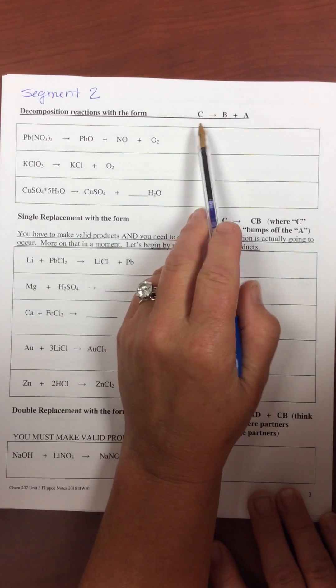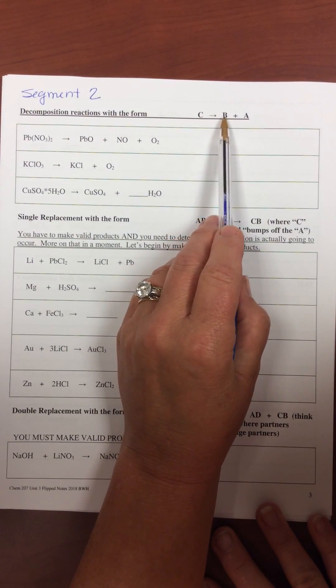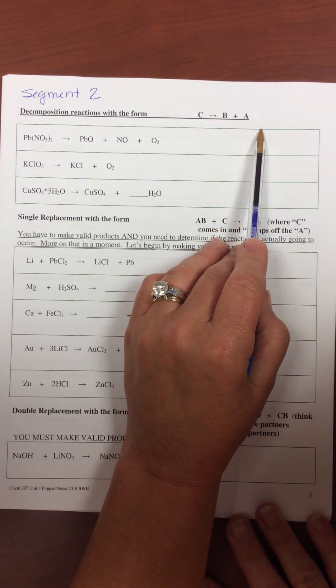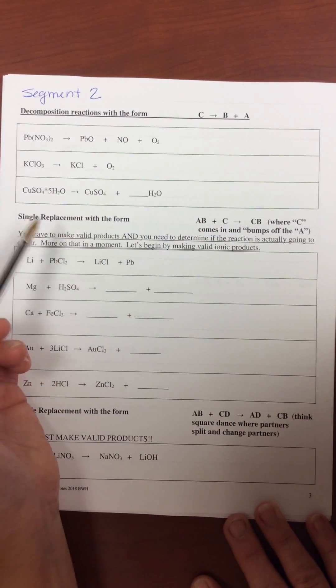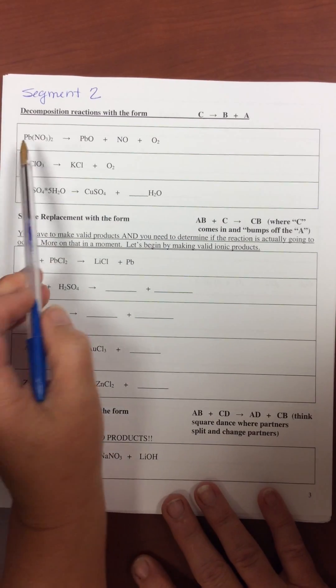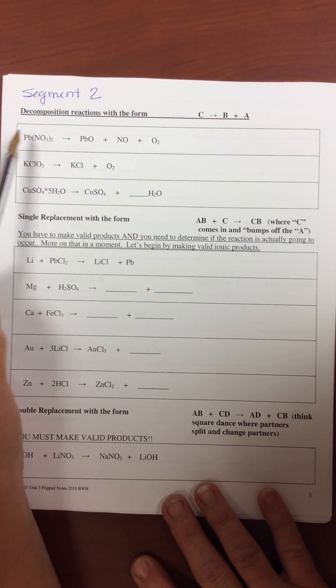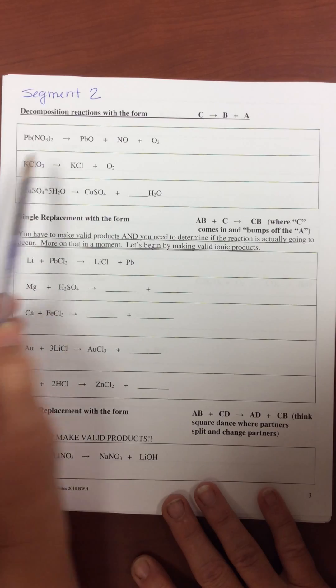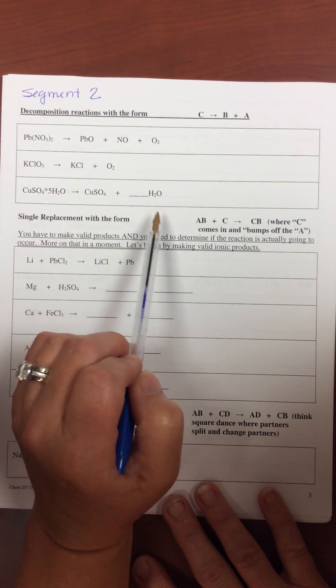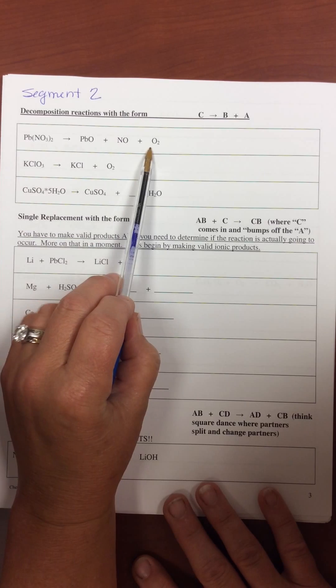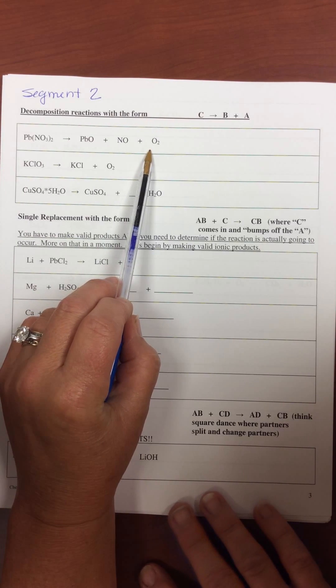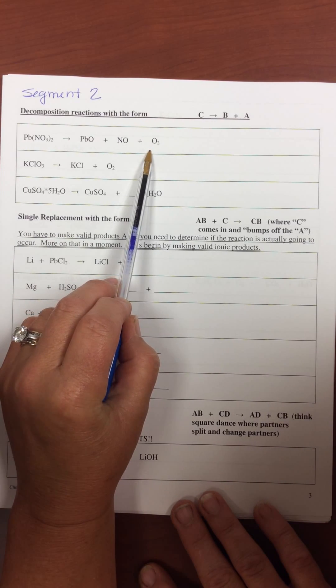Decomposition means you start with one thing and you break it apart into several things. Now these are not as easy to predict, so for the most part you won't really have to predict. You can recognize these because you're starting with one thing and you're breaking up into multiple things. This one is a challenge to balance. So let's start with that one.